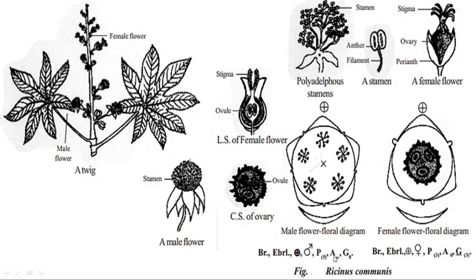Floral formula for male flower: androecium is infinite (∞); gynoecium is 0. For the female flower floral diagram: bracteate, ebracteolate, actinomorphic; perianth 3; androecium 0; gynoecium 3; hypogynous superior ovary.